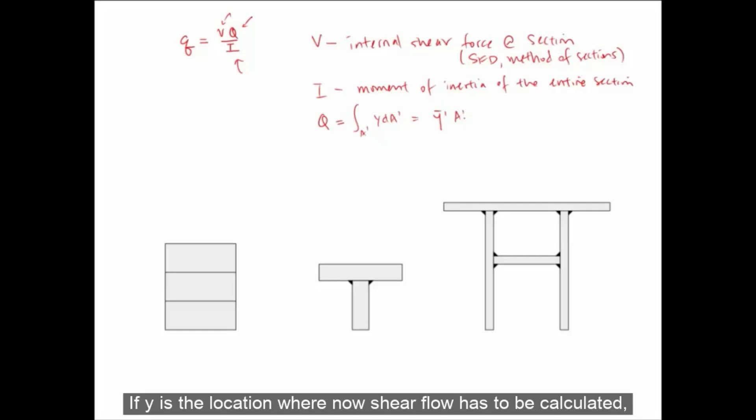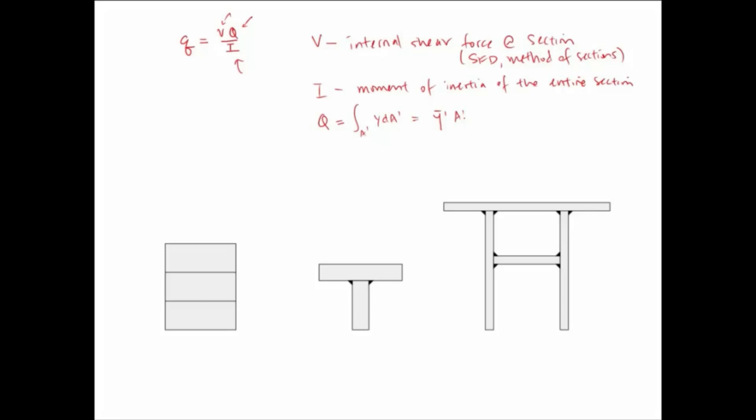Q we know is the integral of Y over some section area A prime, which evaluates to Y prime bar times A prime. And this should all be familiar from the shear formula module. If Y is the location where shear flow has to be calculated, then A prime is the cross-sectional area of the segment that is connected at this location, and Y prime bar is the difference between the centroid of the full section and the centroid of A prime.